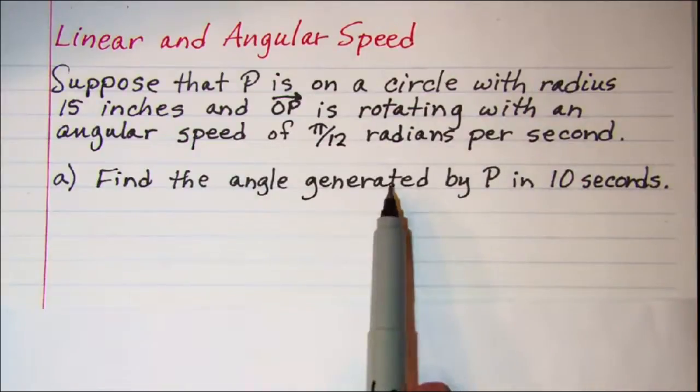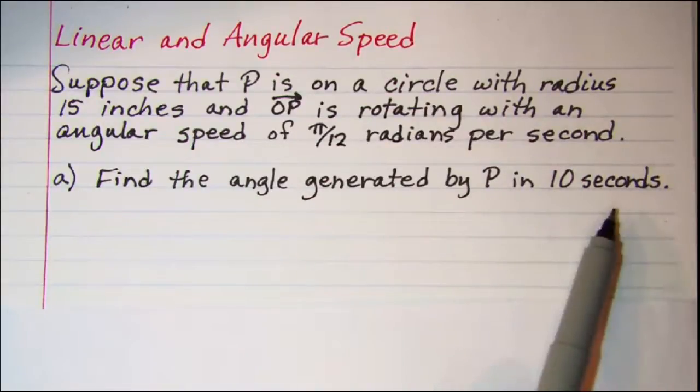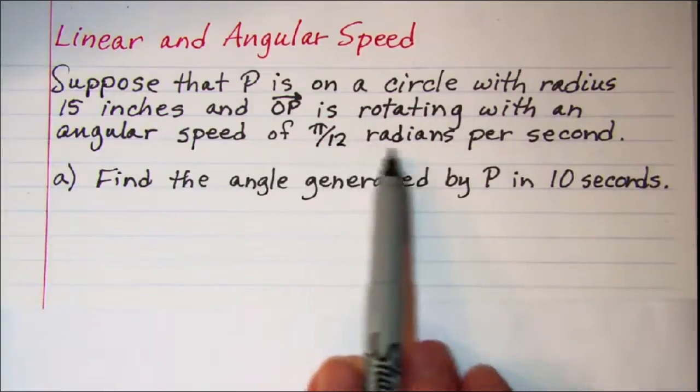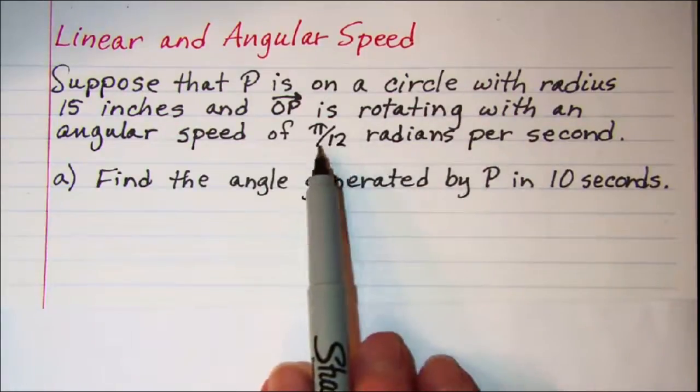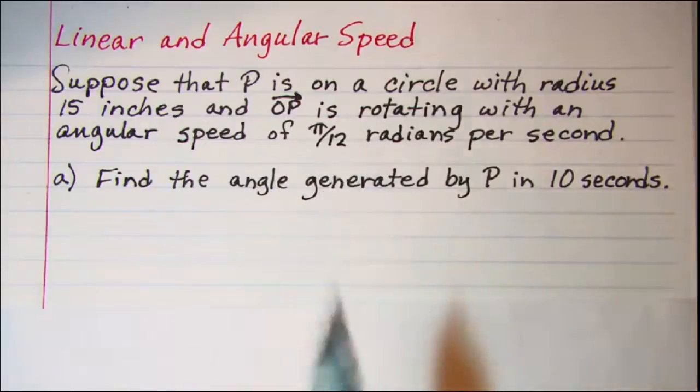Find the angle generated by P in 10 seconds. Well, this angular speed given right here, π over 12 radians per 1 second.